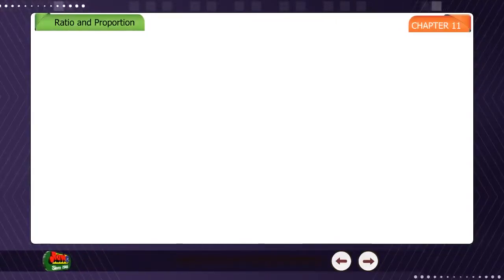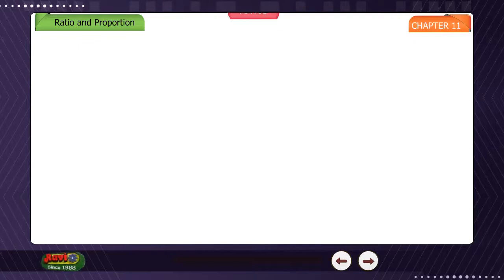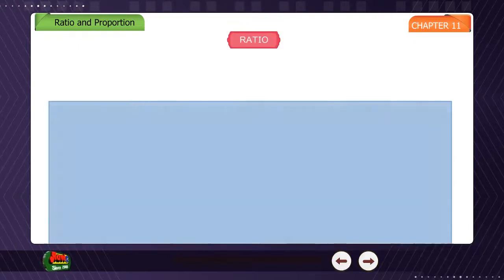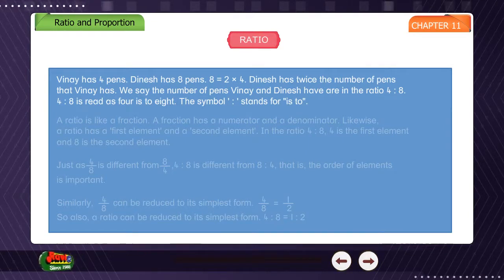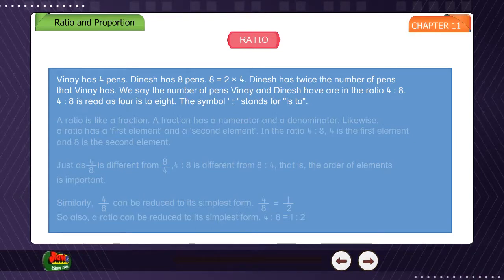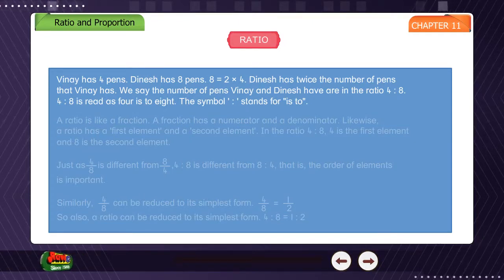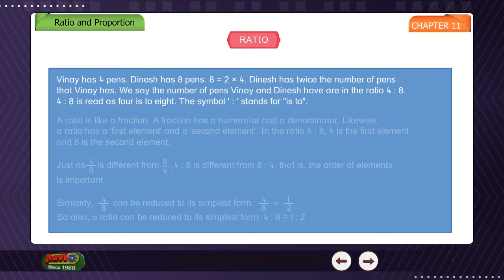Chapter 11: Ratio and Proportion. Vinay has 4 pens and Dinesh has 8 pens. Since 8 is equal to 2 times 4, Dinesh has twice the number of pens that Vinay has. We say that the number of pens Vinay and Dinesh have are in the ratio 4 is to 8.